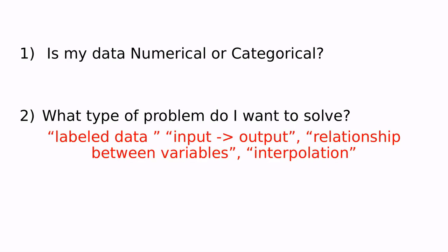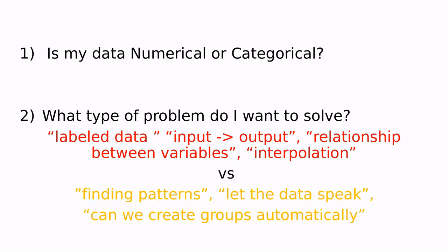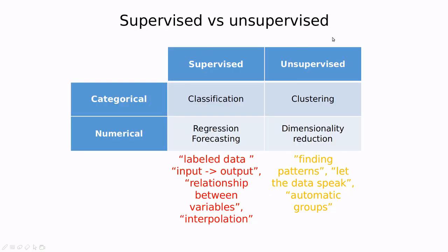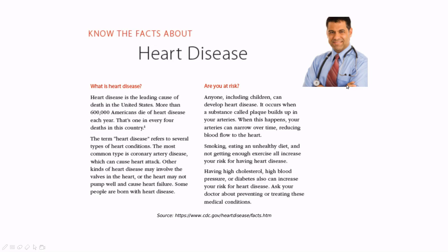So today we're going to talk about problems in which we have input and outputs, and we want to understand somehow the relationship between variables, and our variables are going to be categorical. So in this map of everything that you need to know in machine learning, we're going to discuss this square here. Let's get started.